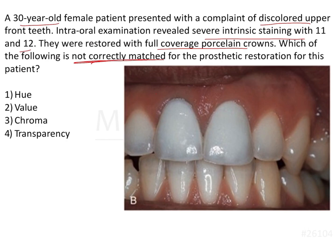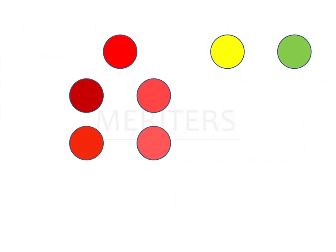The options are hue, value, chroma, or transparency. So we have two central incisors which are restored with full coverage porcelain crowns. The shade is not correctly matched. Now what is not matched?